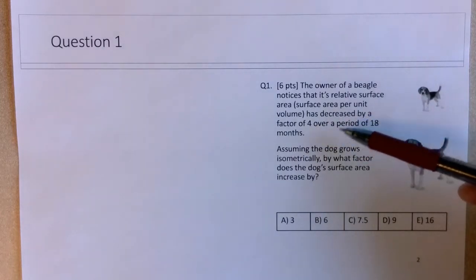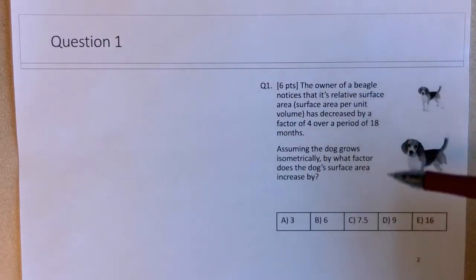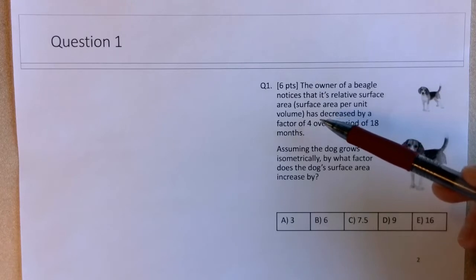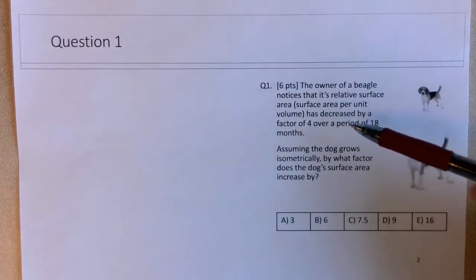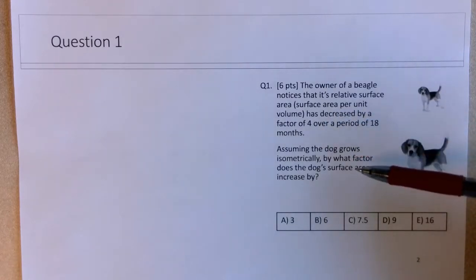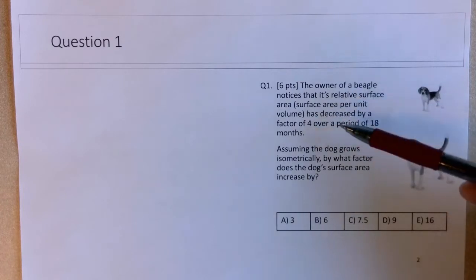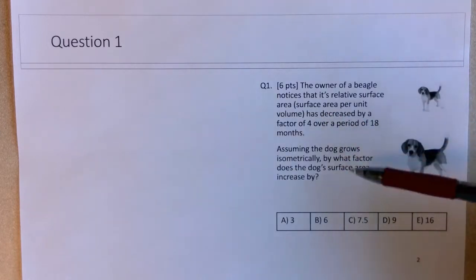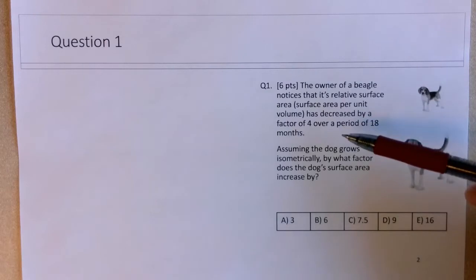So that means it's one quarter of the original relative surface area. So this tells us, and it's something that you should know, is that the relative surface area is a decreasing function with size or volume, in the sense that as the object gets bigger, its relative surface area decreases. Because there's less area per unit volume as the object gets bigger, because area scales more slowly than volume.